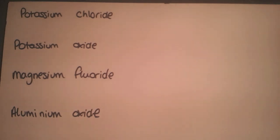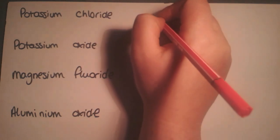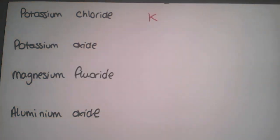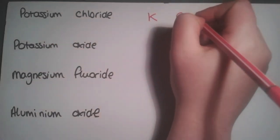The first compound we're looking at is potassium chloride. The first step whenever you're writing formulae is to look in your data book and find the symbols for the two elements. So potassium is K and chlorine is Cl.